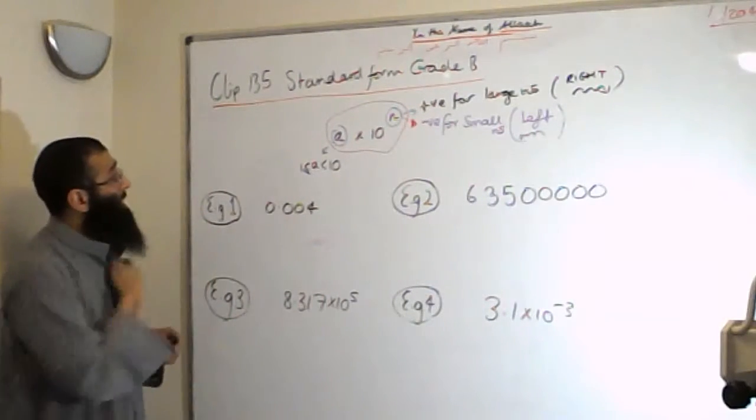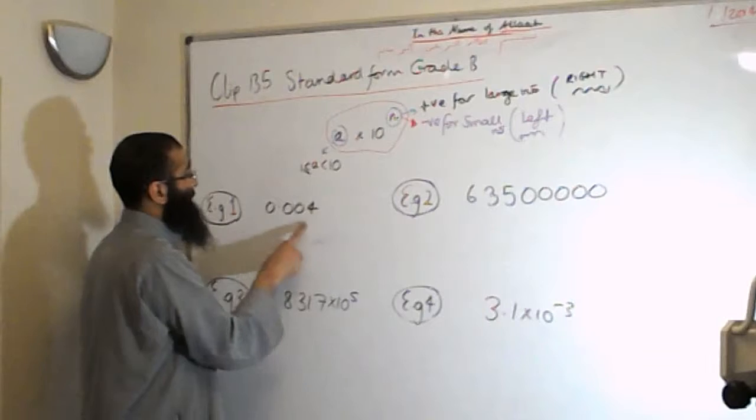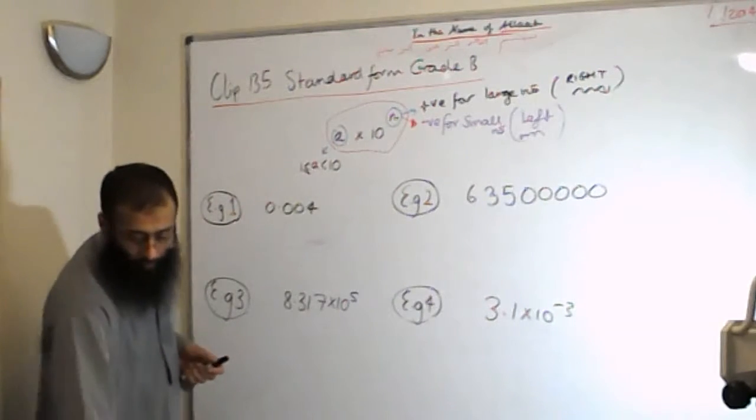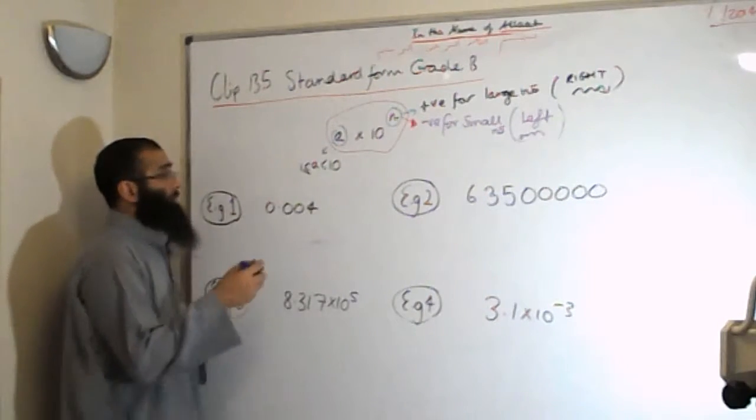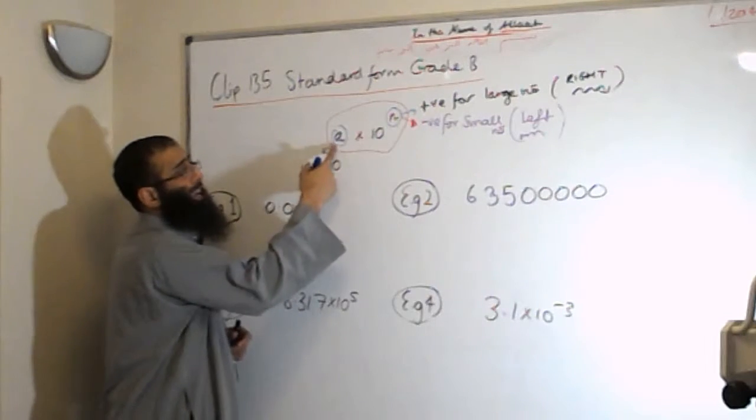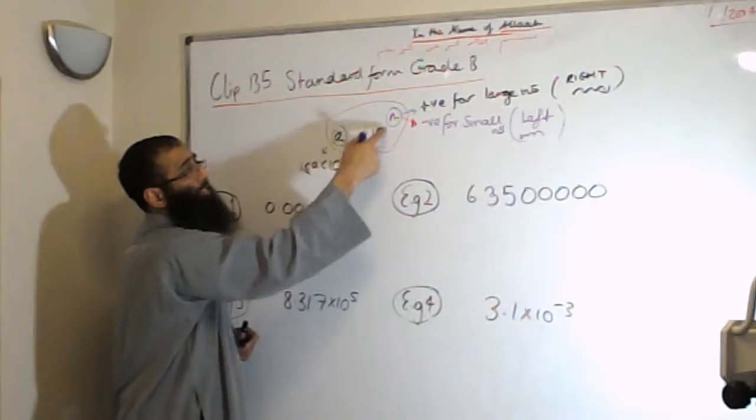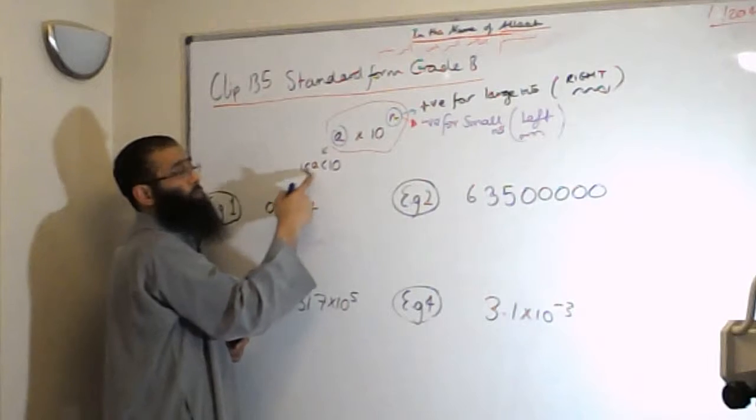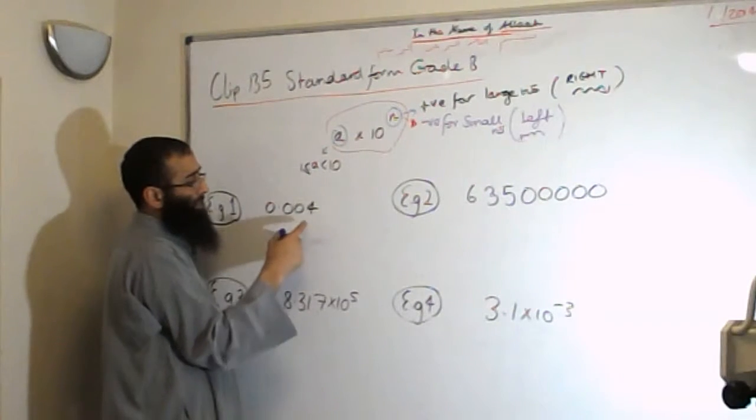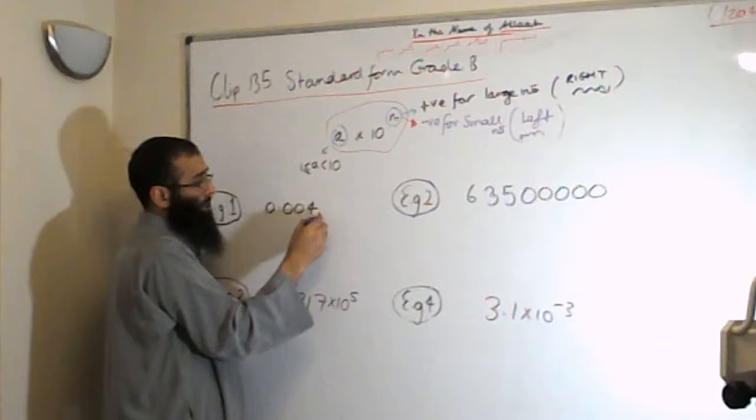Now, without any further ado, let's have a go at some of these questions. So we have the first question, 0.004. If you can express it as A times by 10 to the n, then this A must be between 1 and 10. To make this number between 1 and 10, we need to get this decimal point and put it over here.